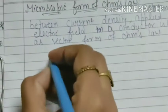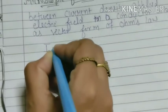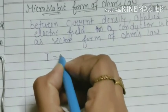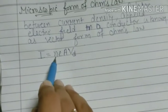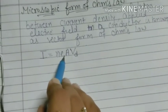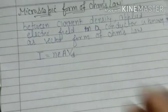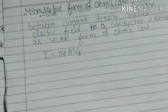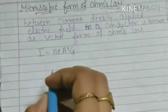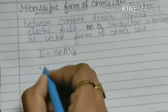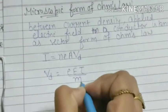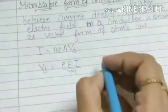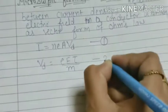हमने एक relation drive किया था current और drift velocity के बीच: I = nEAV_D, जहाँ n number of electrons per unit volume है, e charge on electron है, A area of conductor है, और V_D drift velocity of electron है। और drift velocity का एक और formula था: V_D = eEτ/m, जहाँ τ relaxation time है। यह हमारी first और second equation हैं।